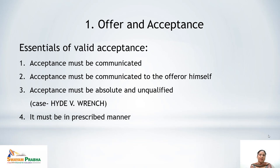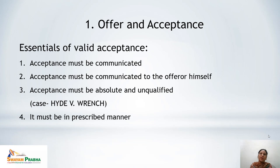Now, the essentials of a valid acceptance. First, acceptance must be communicated. As with the offer, acceptance must also be communicated. For example, if Mr. B has written his acceptance in a letter but kept it in his drawer without posting it to Mr. A, the acceptance has never been communicated. Such acceptance can never be considered valid.